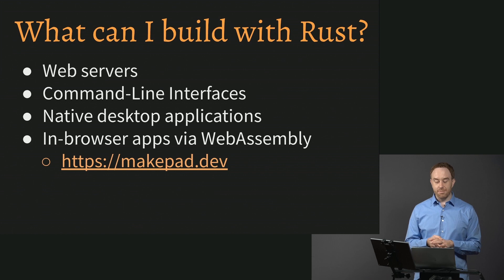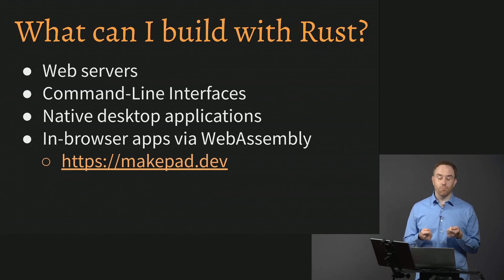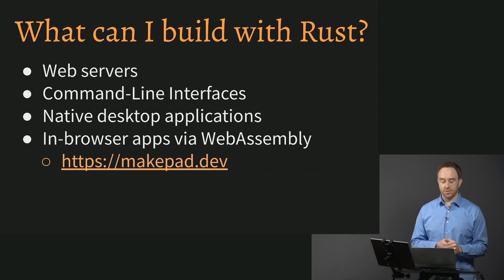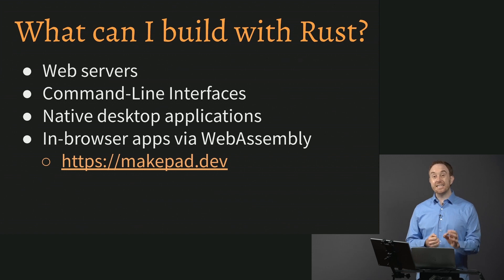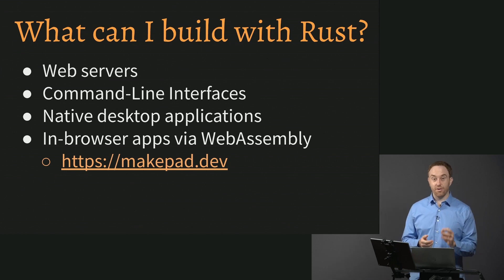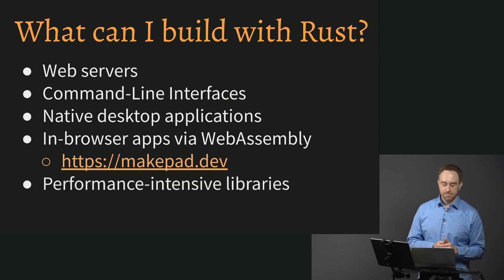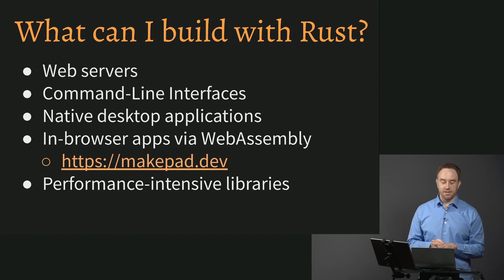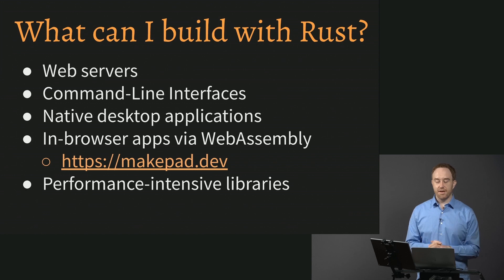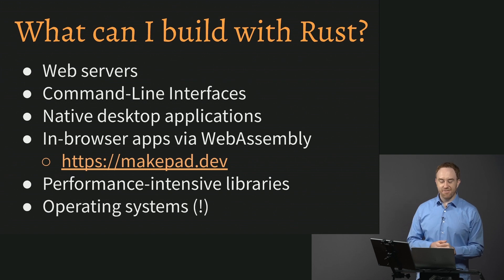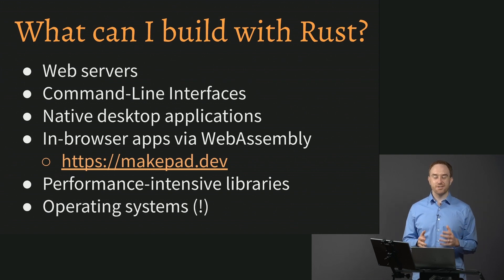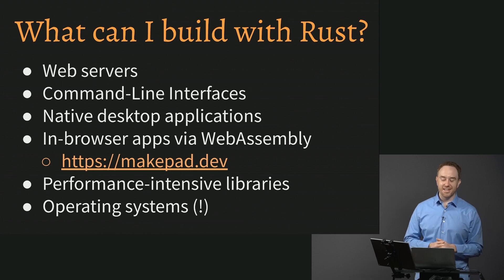A really powerful example is makepad.dev — I recommend bringing it up on your phone. Makepad is a fully-featured IDE that runs at 60 frames per second on your phone, all built with Rust. You might also want to use Rust for performance-intensive libraries in any of those applications — web servers, CLIs, native apps, or in-browser apps — because Rust is really, really good at performance. And finally, like we saw, operating systems: if you want to build your own operating system, that's also something you can do in Rust.